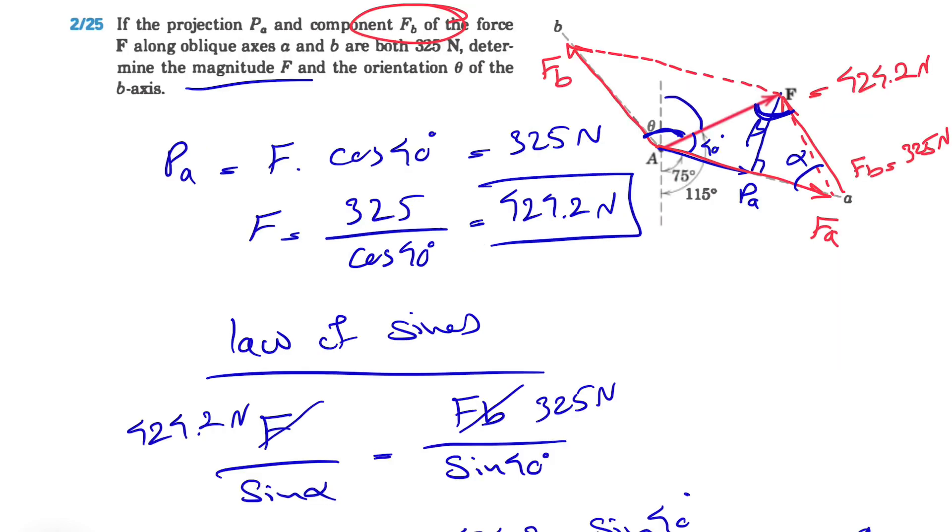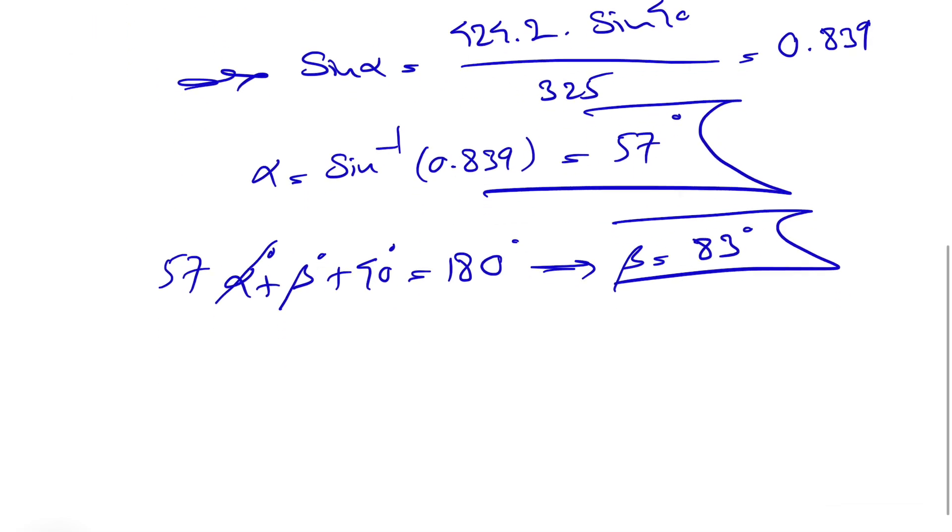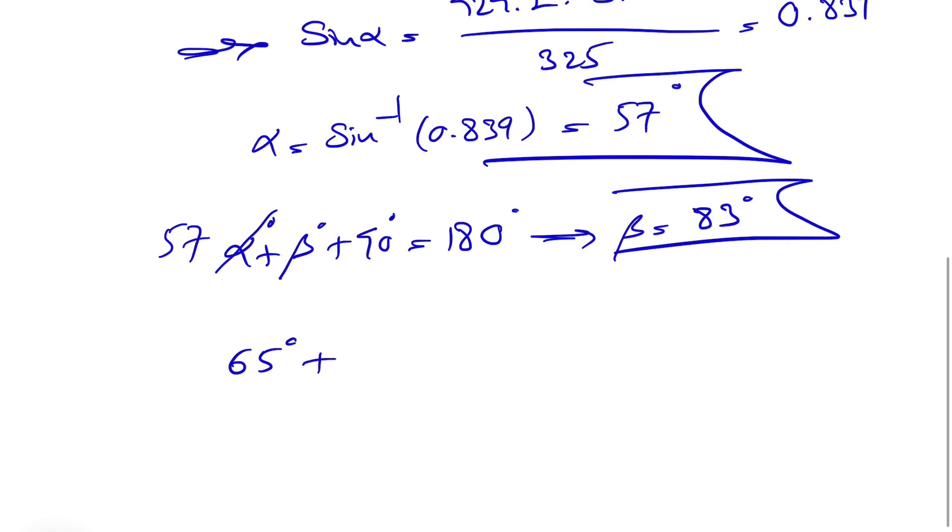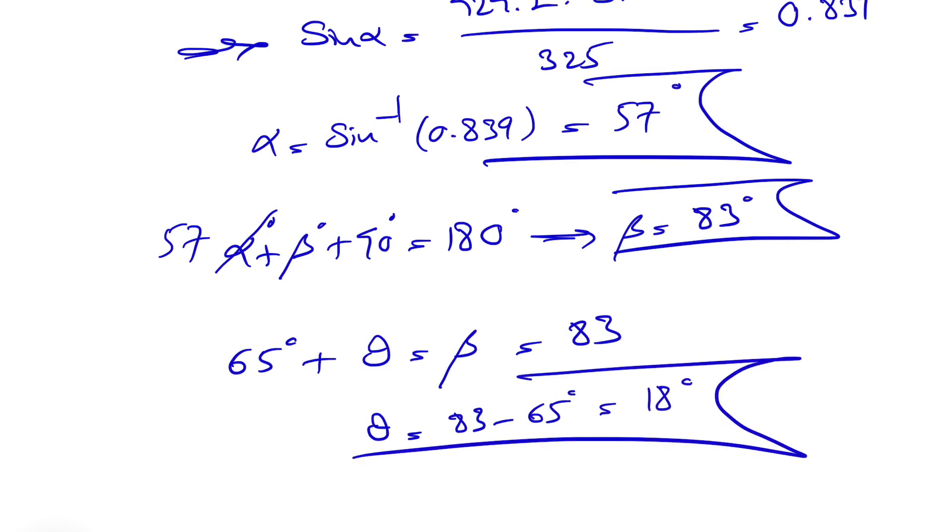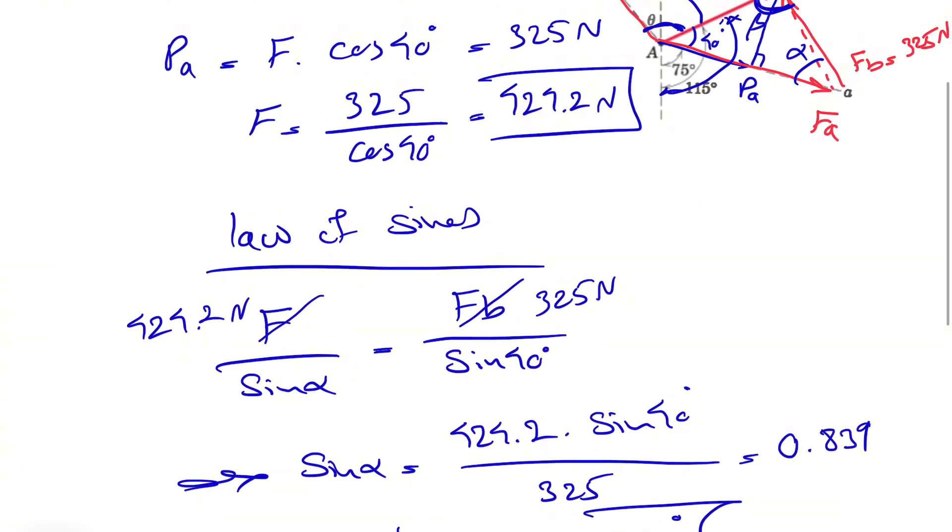We can also find this angle, which is 180 - 115 = 65 degrees. Now, 65 degrees plus θ equals β, which is 83. So θ = 83 - 65 = 18 degrees, which is what the question asks for in the second part.